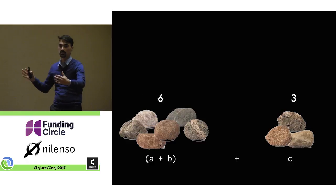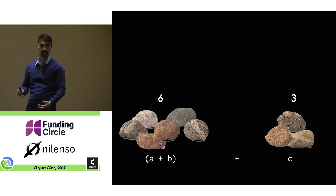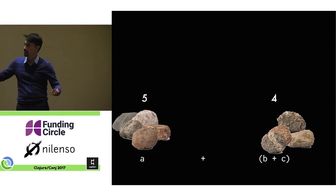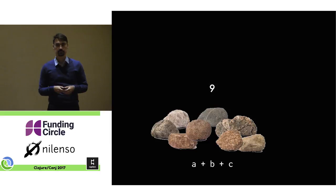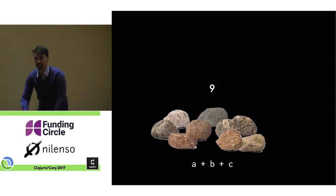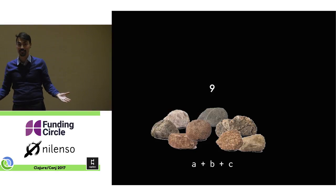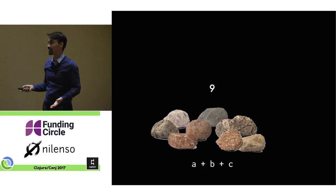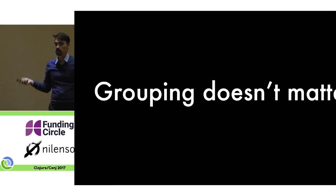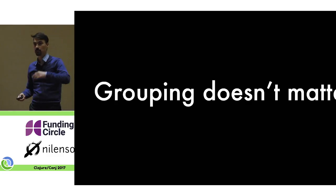So let's take a look at that. So we have these piles of rocks. We have two choices. We can group the ones on the left first and then add in the other one. Or we can start with the ones on the right and add in the third one. There's also the third choice, which is just put them all together at once, which is what we do in Clojure. We just have a plus with a bunch of numbers because we don't like to write extra parentheses in Lisp. What this means is grouping doesn't matter.